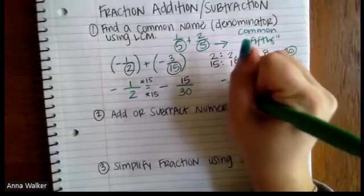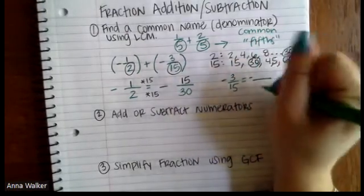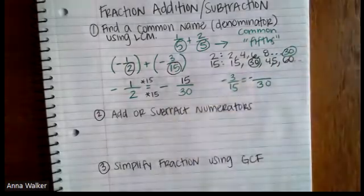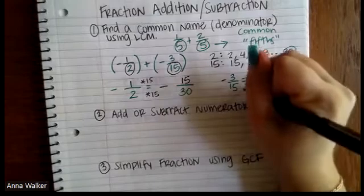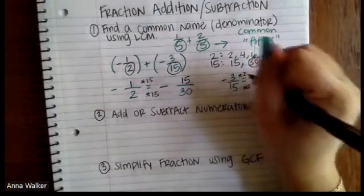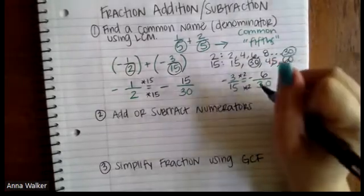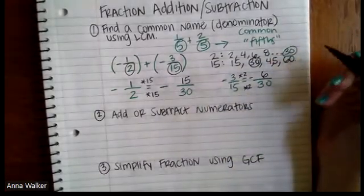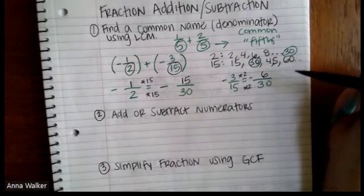Let's do three fifteens. So we have negative three fifteens, and this is going to be equivalent to something, the negative version of something out of 30. So we have to look at what times 15 makes 30, 15 times two makes 30. So if we do the top three times two is six. So six over 30 is going to be equivalent to three over 15, but in terms of thirtieths.